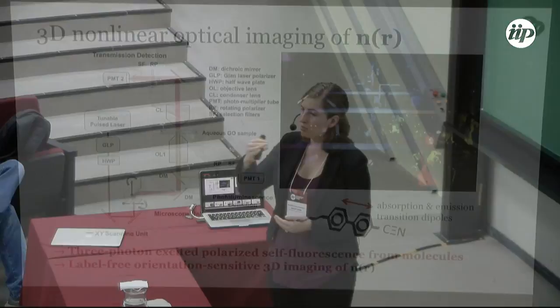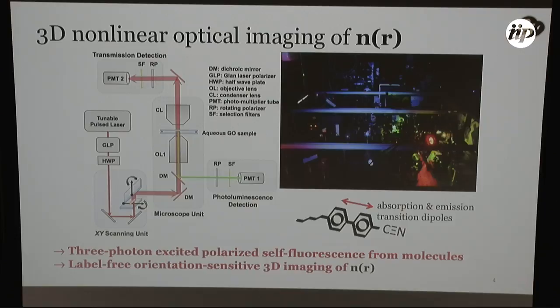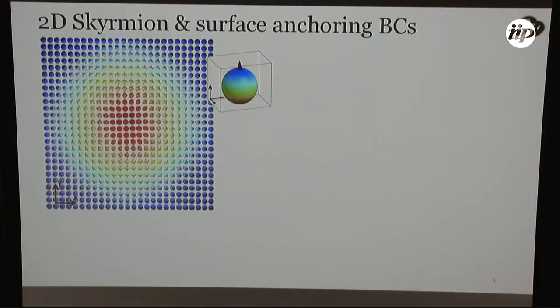So we can view these solitons in this way, but to get more information, we can also use a 3D imaging technique to probe through our sample to understand the three-dimensional director structure based on the self-fluorescence of these rod-like liquid crystal molecules. But for now, let's return to this view of our baby skyrmion. So far, we've been looking at our baby skyrmion in the XY plane.